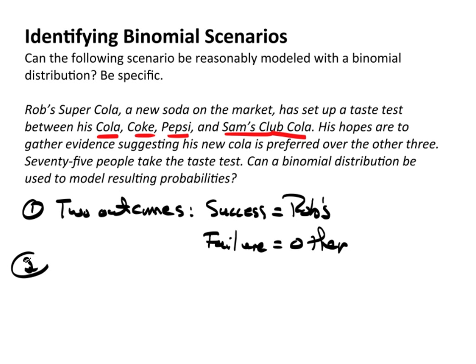And then probability of success equals, well, what do we know? There's four of them. So the probability of success, if there's actually no difference between these, would be one fourth. If there's no difference between them, then you expect 25% of the time that somebody just randomly going to pick his Cola. So we're going to calculate this as the probability of his soda being chosen is one out of four. Three out of four would be probability of failure.